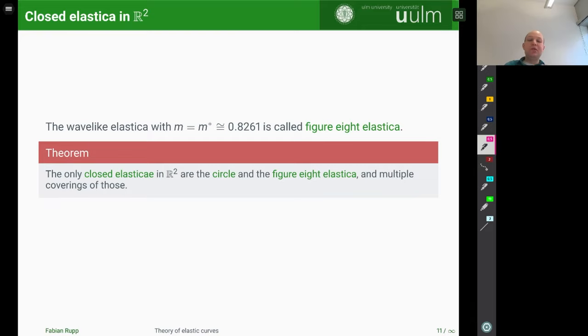Or of course, what you can do is you can take multiple coverings of those. And what you can also do is you can move them, you can translate them, you can rotate them, you can rescale them, and of course, you can also re-parameterize them. But up to these invariances, those two types are the only closed elastica in R². And this follows from the results of Langer-Singer. Okay, and then this is a good time for a little break and we will resume with the main results in the second video.